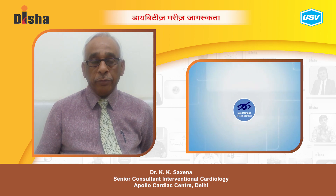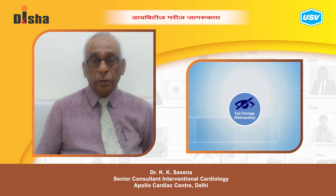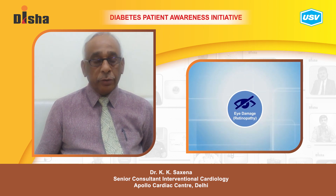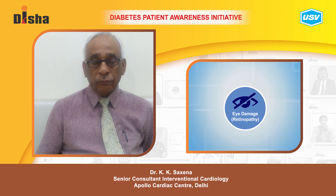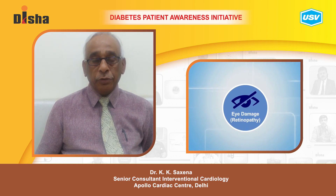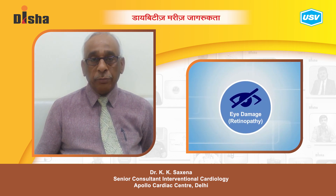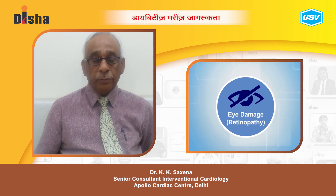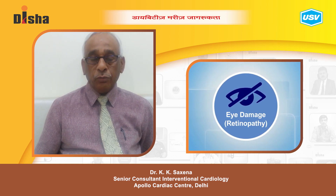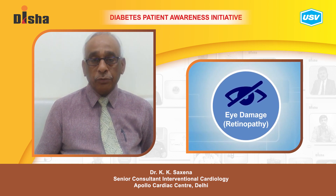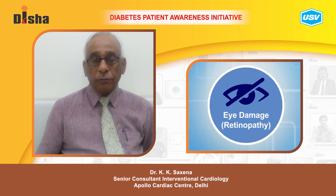One main area is the eye, which is called diabetic retinopathy. In this condition, there are a lot of vision problems, and sometimes there is complete loss of vision. This may progress to the point where the patient cannot see.